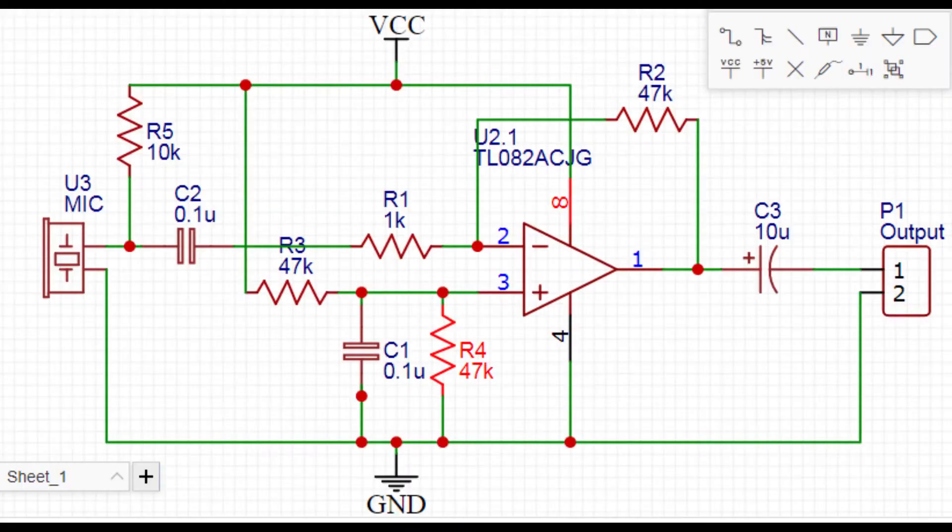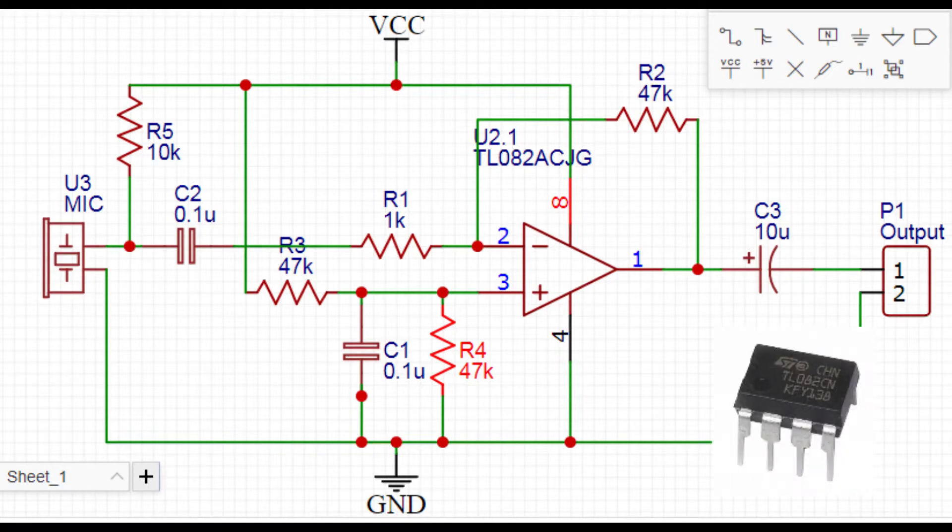In our circuit diagram we will need resistors, capacitors, the TL082 op amp, and of course a microphone, which is a micro electrode type in our project.